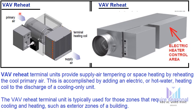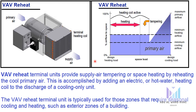VAV Reheat Terminal: A VAV reheat terminal unit provides supply air tempering or space heating by reheating the cool primary air. This is accomplished by adding an electric or hot water heating coil to the discharge of a cooling only unit. The VAV reheat terminal unit is typically used for zones that require seasonal cooling and heating, such as exterior zones of a building. In the cooling mode, the unit is controlled in the same manner as the cooling only unit. The supply airflow is reduced as the cooling load in the space decreases. When the space cooling load drops below the minimum primary airflow setting, the heating coil warms or tempers the primary air to balance the low space cooling load.